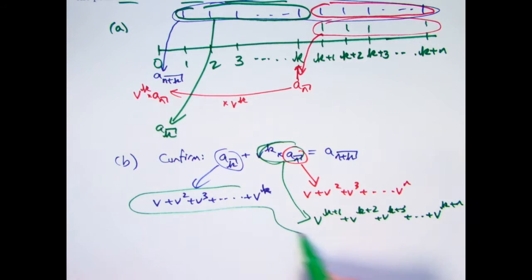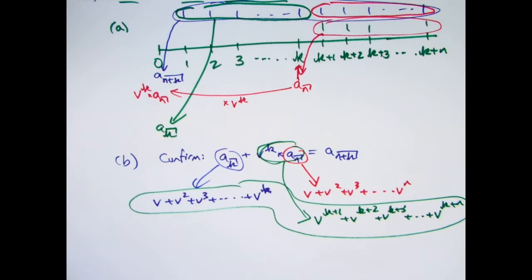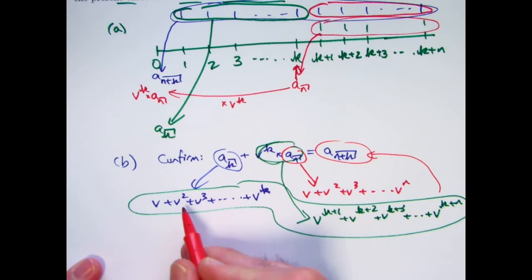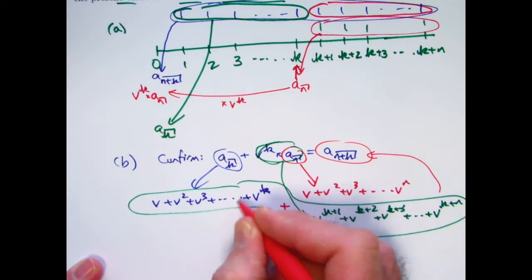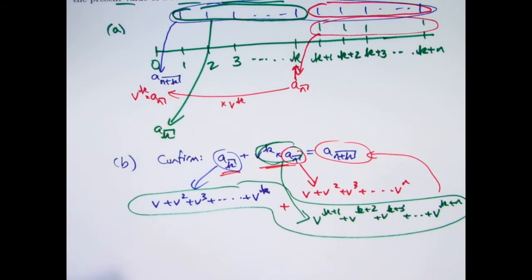Now combine these two things, add them, and you obviously get this thing. That thing definitely is V plus V squared plus V cubed, et cetera, all the way over to here with the last term of plus V to the K plus N. We add these two things that are represented symbolically here and here to get this thing.